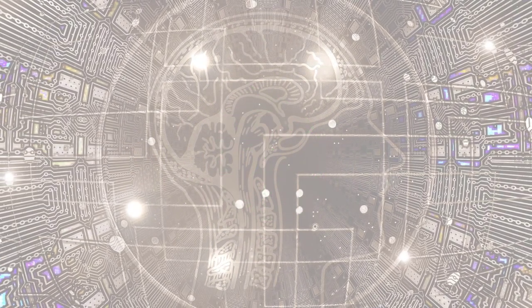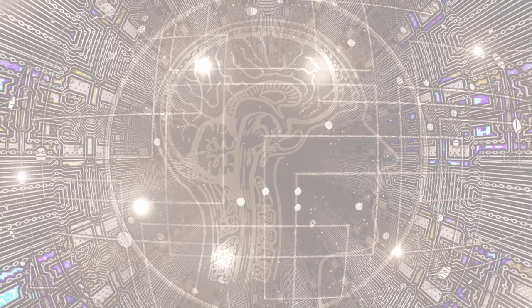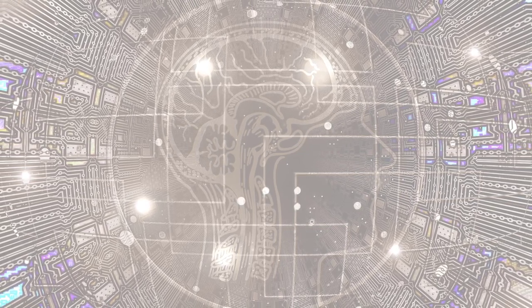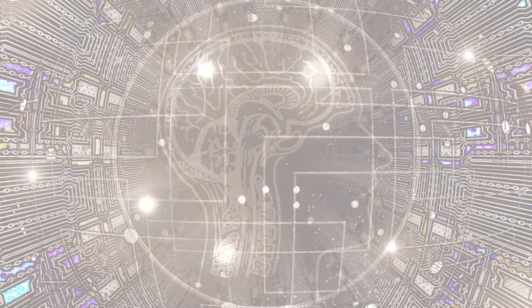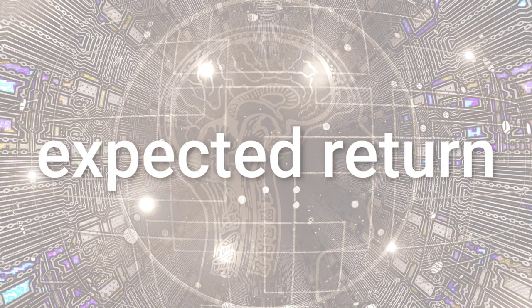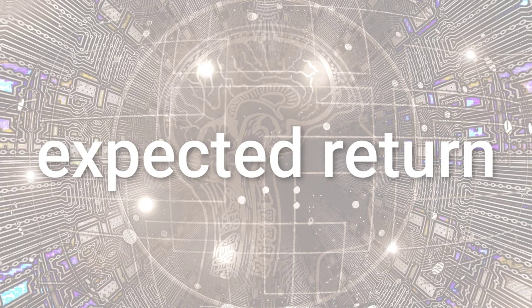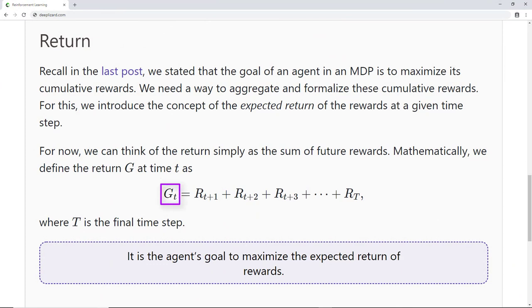Recall in the last video, we stated that the goal of an agent in an MDP is to maximize its cumulative rewards. Well, we need a way to aggregate and formalize these cumulative rewards. So for this, we introduce the concept of the expected return of the rewards at a given time step. For now, we can think of the return simply as the sum of future rewards. Mathematically, we define the return G at time t as the reward at time t plus 1 plus the reward at time t plus 2 all the way up until we get to the reward at time big T, where big T is the final time step.